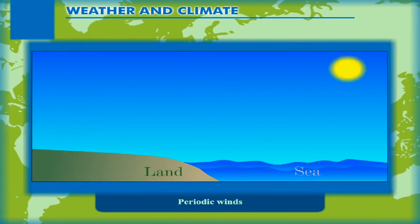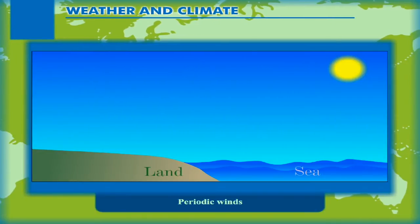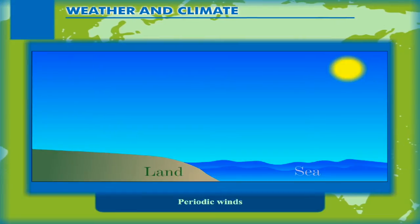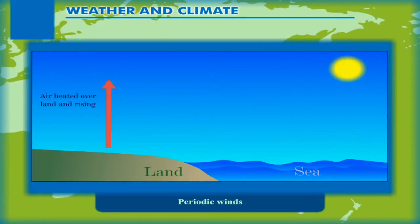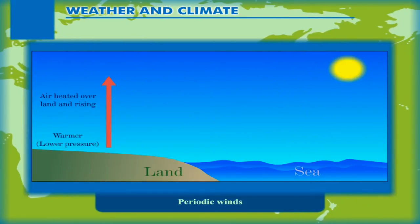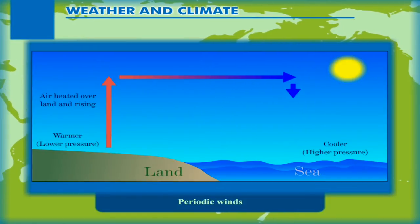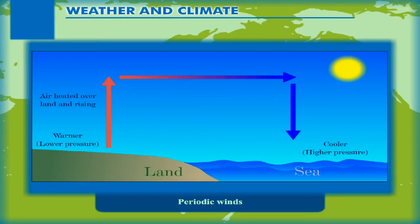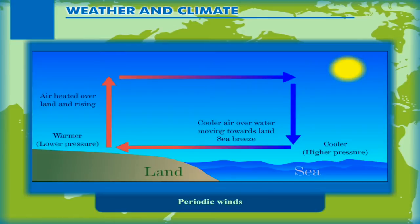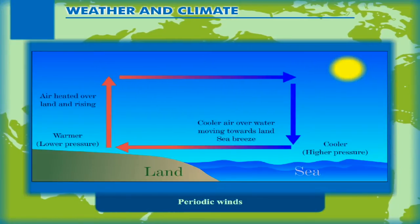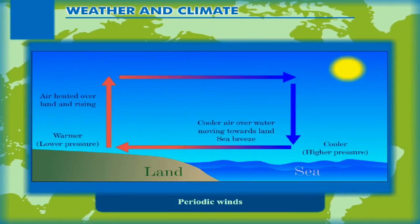Periodic winds. Water takes longer than land to get heated and cool down. During the day, the land becomes hotter than the sea. The air above the land becomes hot and rises, leading to low pressure over the land. Since the air above the sea is cooler, the pressure above the sea is higher. So, the cooler air from the sea moves towards land during daytime. This is called sea breeze, which brings down the temperature in coastal areas during the day.